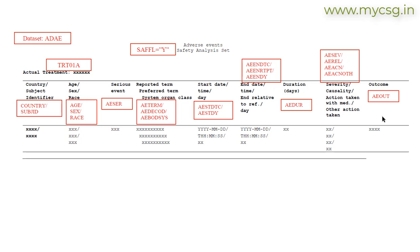If done prospectively, this ensures that all the variables are present in the ADaM specification. If done retrospectively, it helps TFL programmers identify the variables to be used for each output. We repeat this for all the shells present in a study. This is why we do annotation, and companies may choose either the prospective or retrospective approach depending on their needs. Prospective handles it even before creating your ADaM dataset, while retrospective is meant for providing instruction to the TFL programmers. Thank you for watching and keep learning.